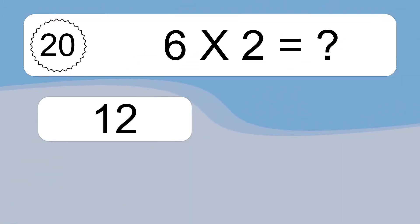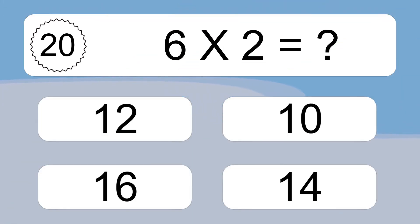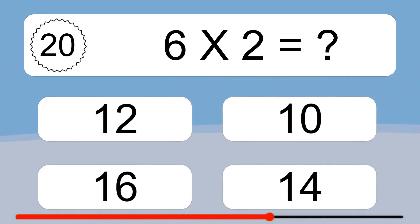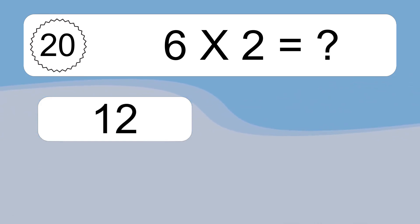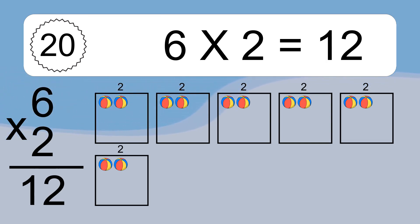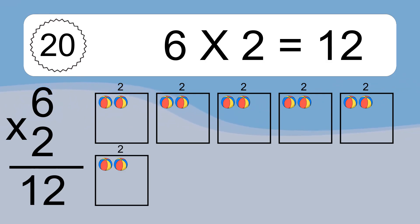6 times 2 equals what? 6 times 2 equals 12. We have 6 boxes, and each box has 2 colorful balls inside. If you count all the balls in all the boxes together, you will have 6 times 2 balls. This equals 12 balls.